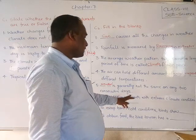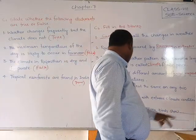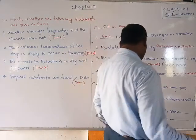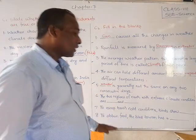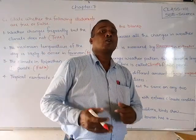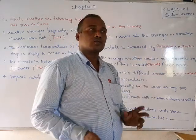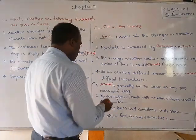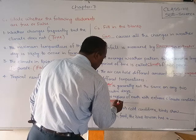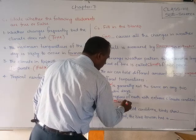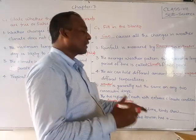Sixth blank: the two regions of earth with extreme climate conditions are dash. One is the equator and the other is the poles. The poles are very cold and the equator is very hot. These are the two regions with extreme climate conditions. The answer is: equator and poles.